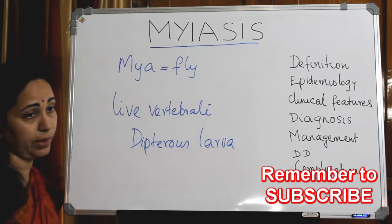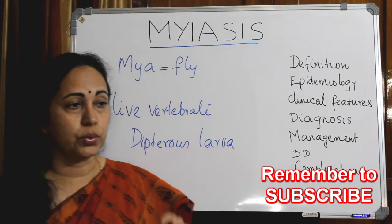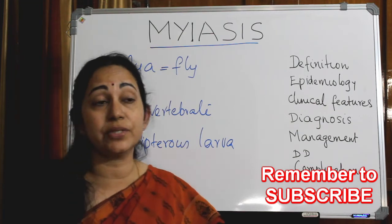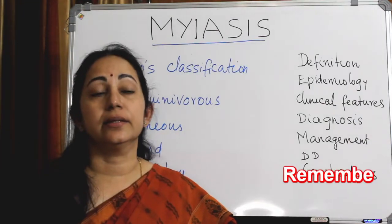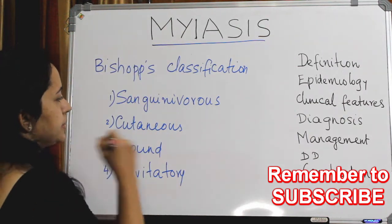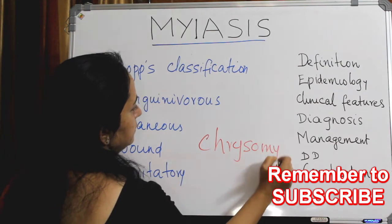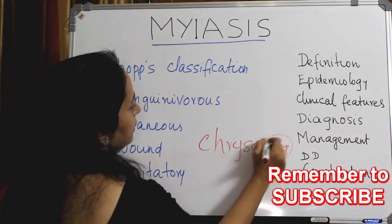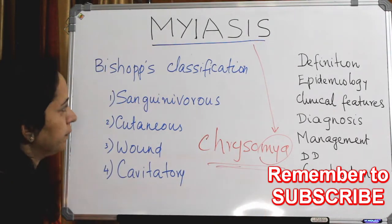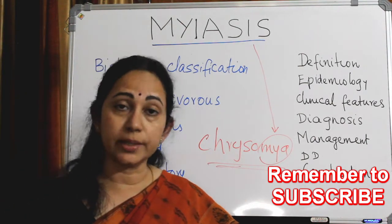The house fly involved is of diptera — meaning true flies. So infestation of live vertebrates with dipterous larvae is the definition of myiasis. The species of our common house fly is Chrysomia. This is a common house fly, and it is from here that myiasis comes.